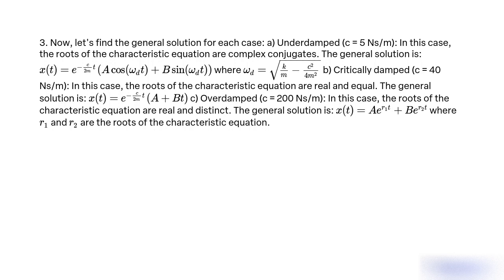Critically damped: C = 40 Ns/m. In this case, the roots of the characteristic equation are real and equal. The general solution is x(t) = e^(−c/2m·t) · (A + B·t).